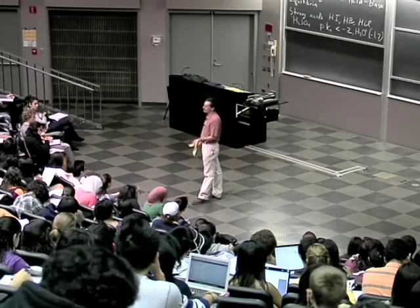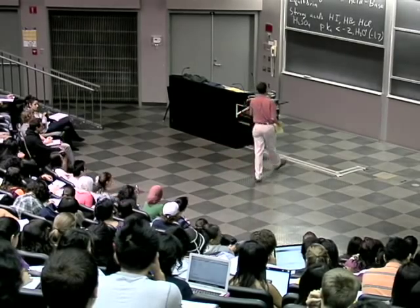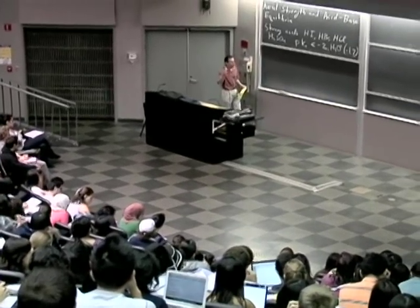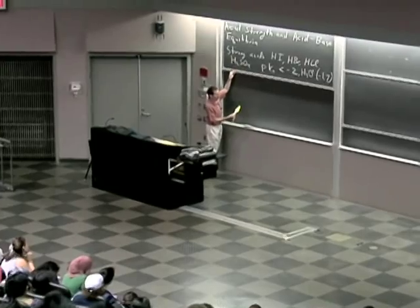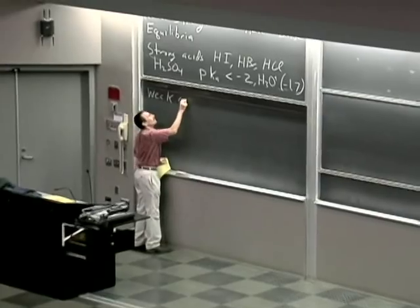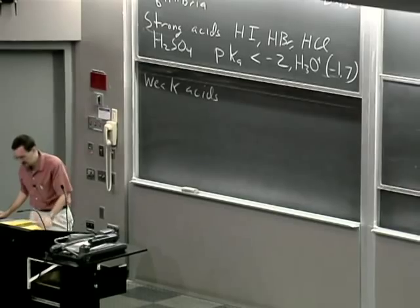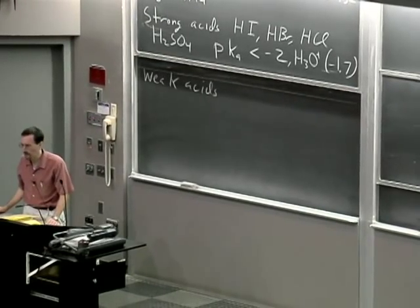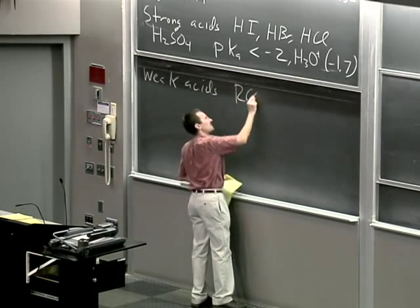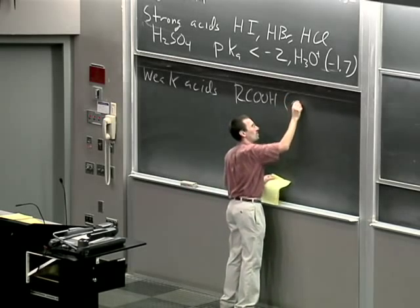In weaker acids, you start to have equilibria set up. In very strong acids, you're fully dissociated. Weak acids — the ones you're thinking of — these are compounds that you would think of as acids, but not very strong. They're largely undissociated. Carboxylic acids, RCOOH, have pKas typically around 4 to 5.